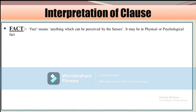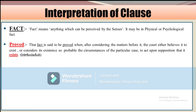The first key term is 'Fact.' The word 'fact' comes up repeatedly in the Evidence Act. Fact means anything which can be perceived by the senses. It may be a physical fact or a psychological fact.